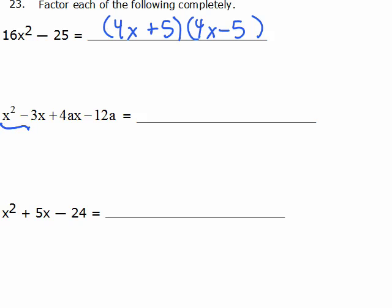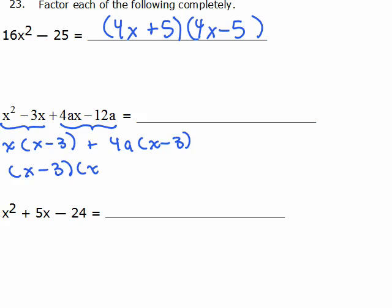This one I'm going to do by grouping. Out of the first two, I'm going to factor out an x. And out of the second two, I'm going to factor out a 4a. So now I have a common factor of x minus 3. That's the answer.